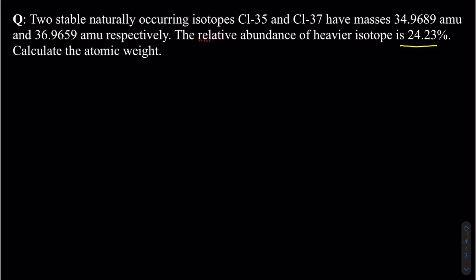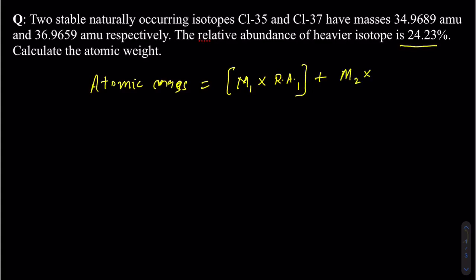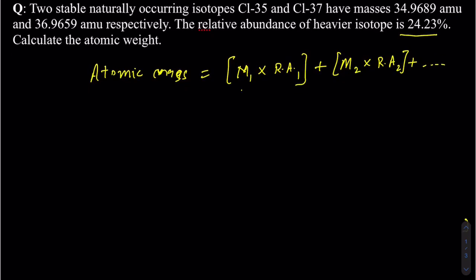The formula to calculate atomic mass from isotopes is: atomic mass equals the mass of isotope 1 times the relative abundance of isotope 1, plus the mass of isotope 2 times the relative abundance of isotope 2, and so on for however many isotopes you have. If you're given the masses and the relative abundance, it's easier to figure out the atomic mass, and that's exactly what we have in this particular question.